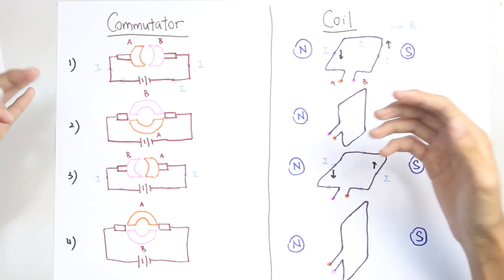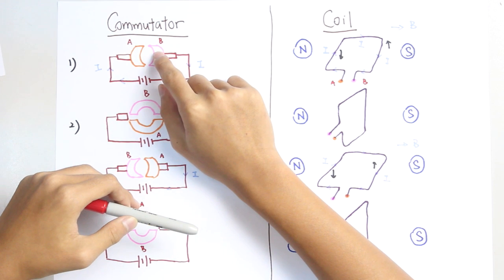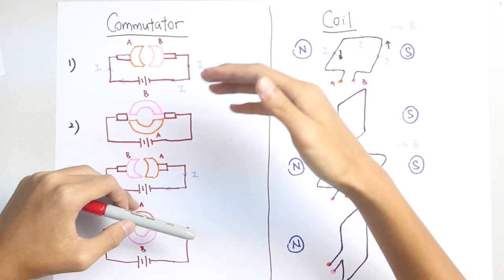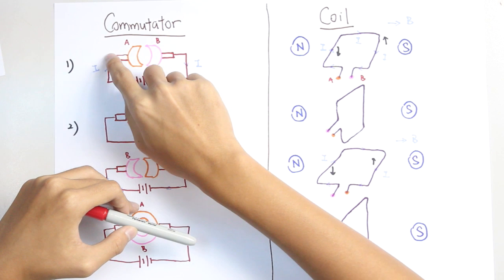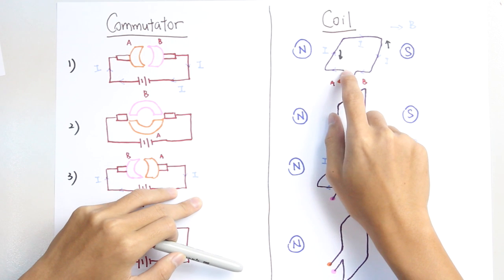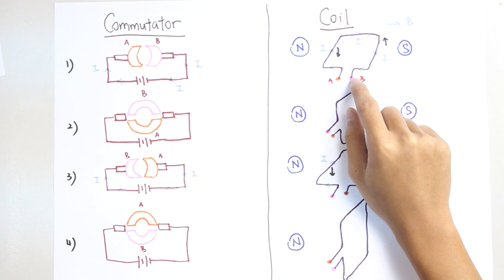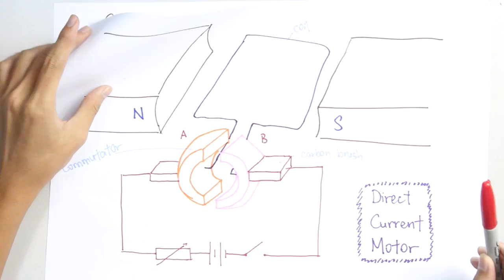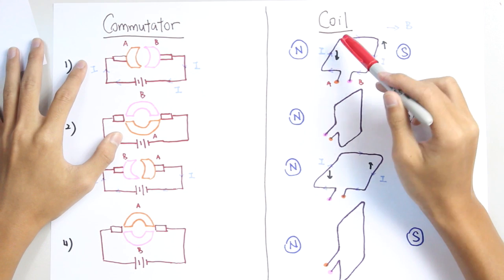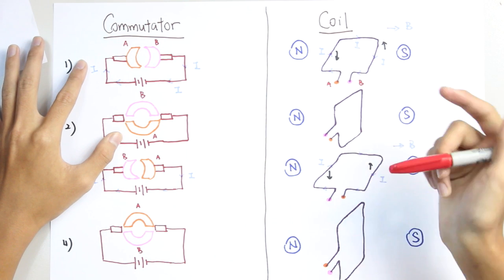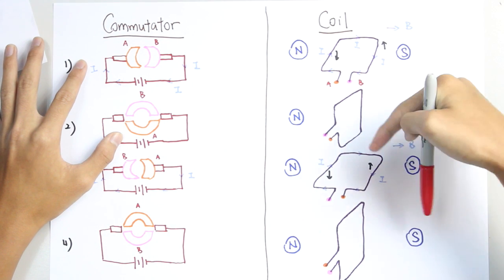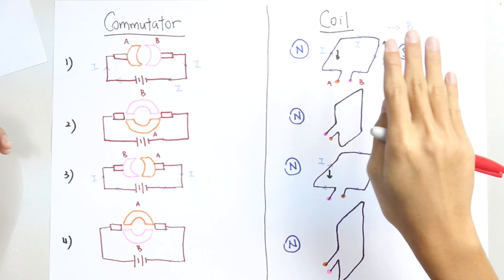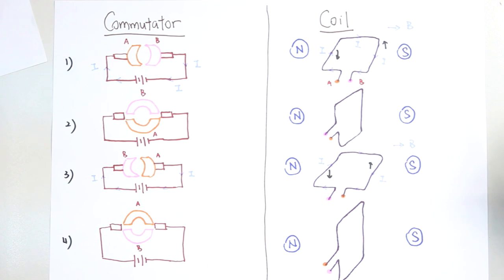At the original position, A is on the left side and B is on the right side. The carbon brushes have contact with A and B respectively. When the switch is closed and the current flows, it goes from A all the way through the coil back to B. On this side the current is going upward and on this side it is going downward. This causes an anti-clockwise rotation, just as explained in the last lesson.